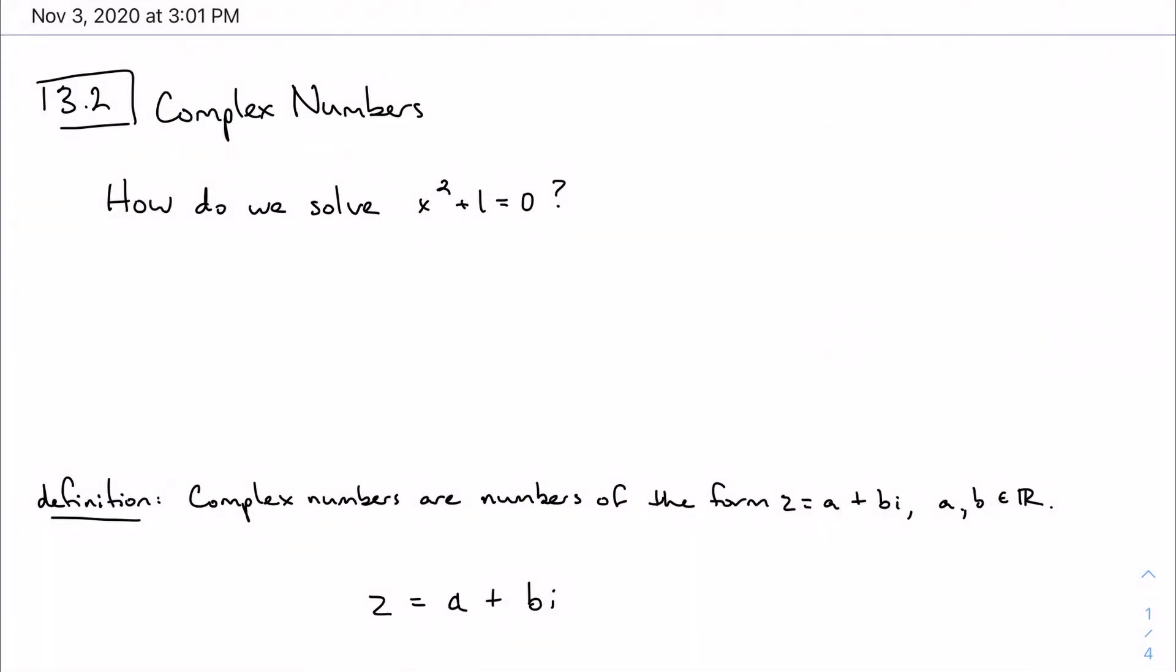Moving on to section 3.2, talking about complex numbers, which were kind of born out of necessity. Way back when, mathematicians hit a roadblock when they tried to solve an equation like this: x squared plus 1 equals 0. So they went along and tried to solve it.